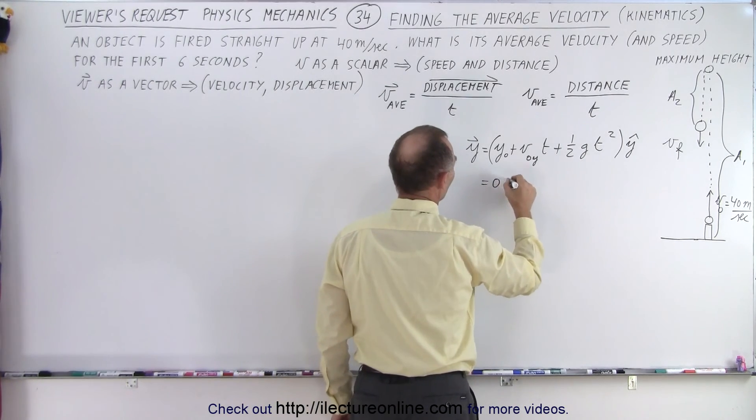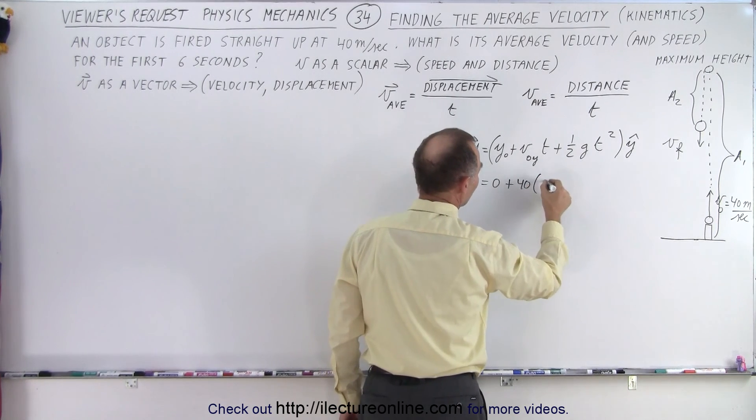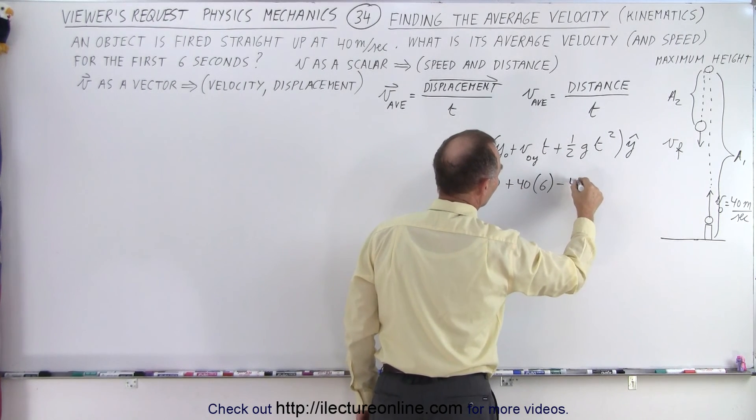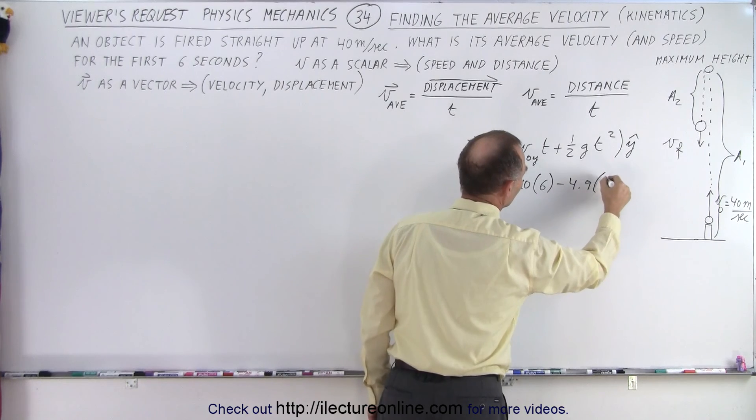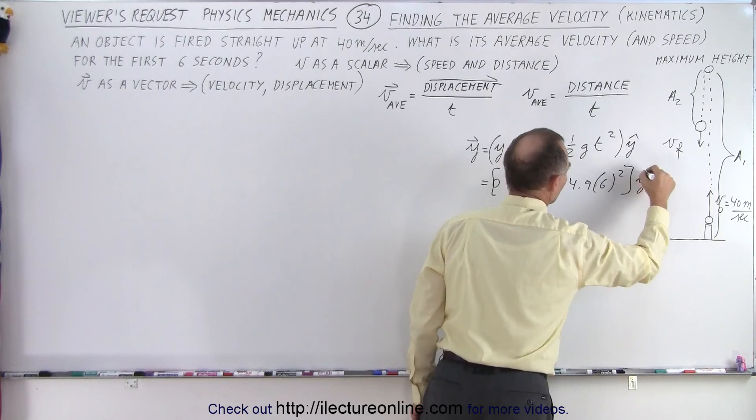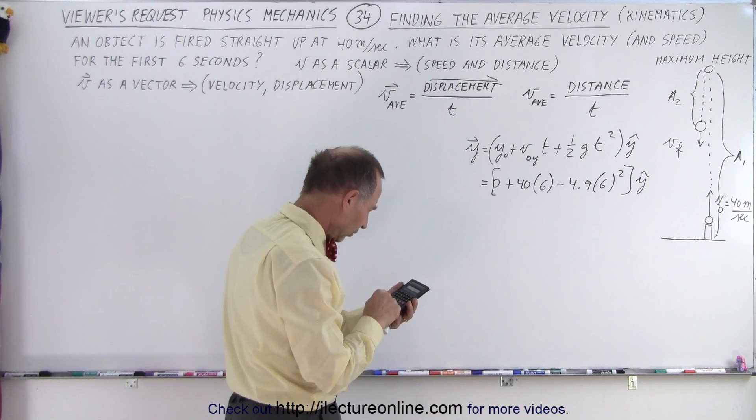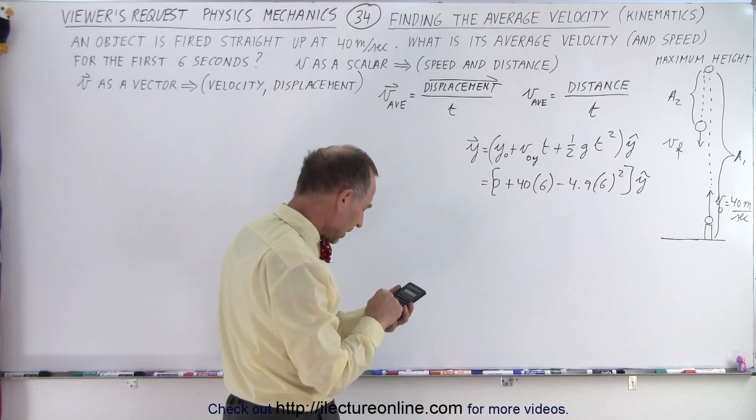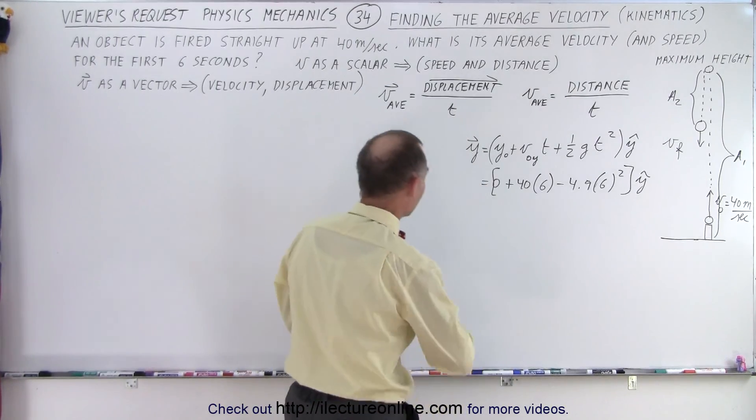So this will be equal to zero plus 40 times, well, it takes a total time of six seconds, plus one-half, well, that's g, which will go minus 4.9 t squared, and t is, again, six seconds squared, and the whole thing in the y direction. So that will be the vector quantity that we're looking for. So it gives us 240 minus 4.9 times 36 gives us 63.6 meters.